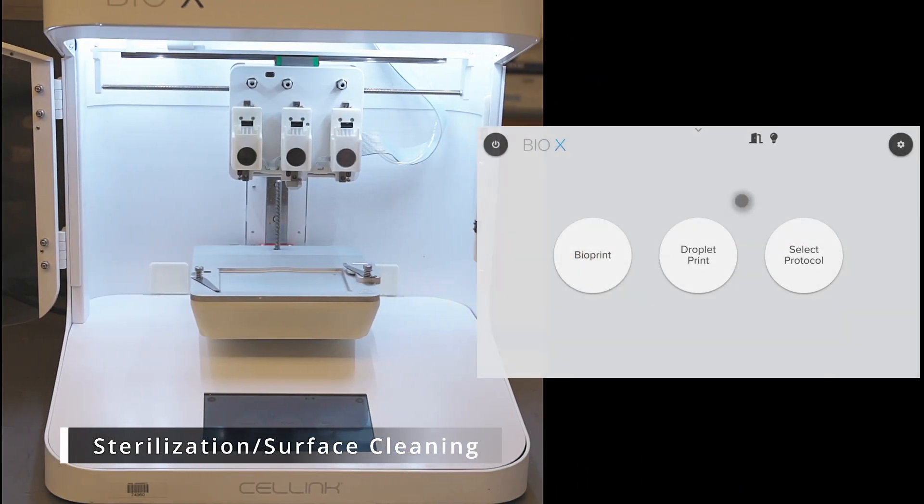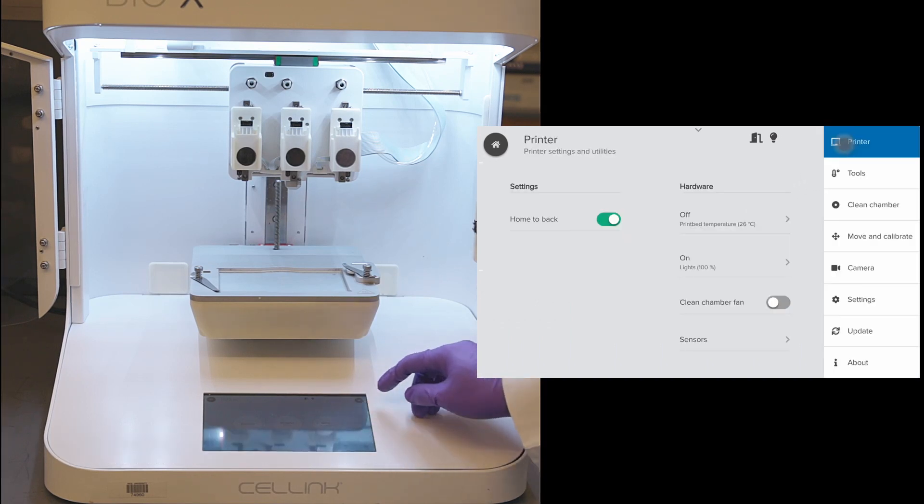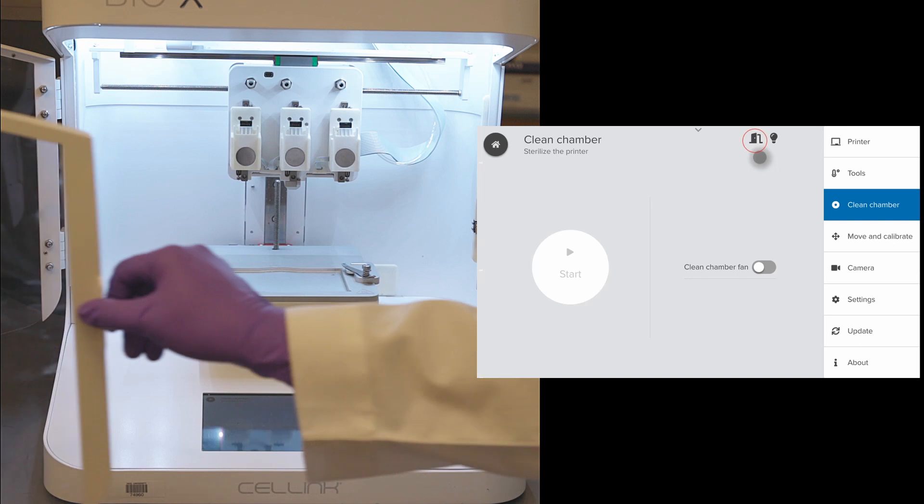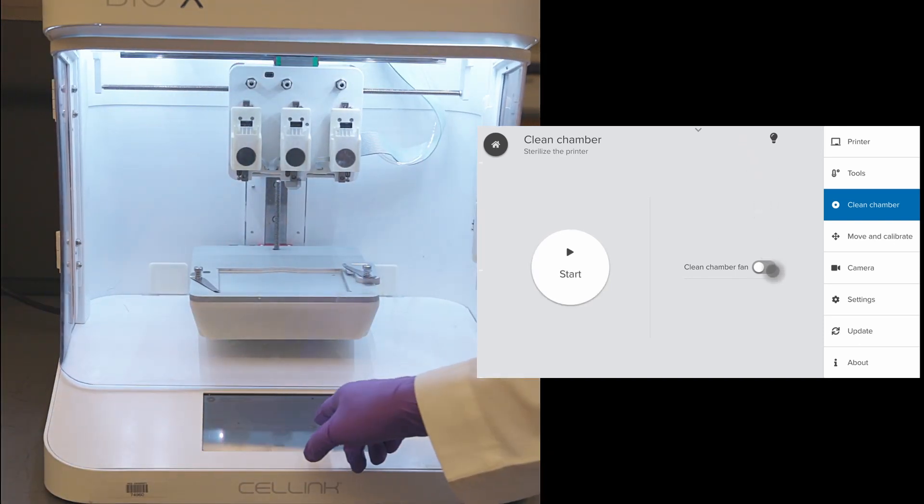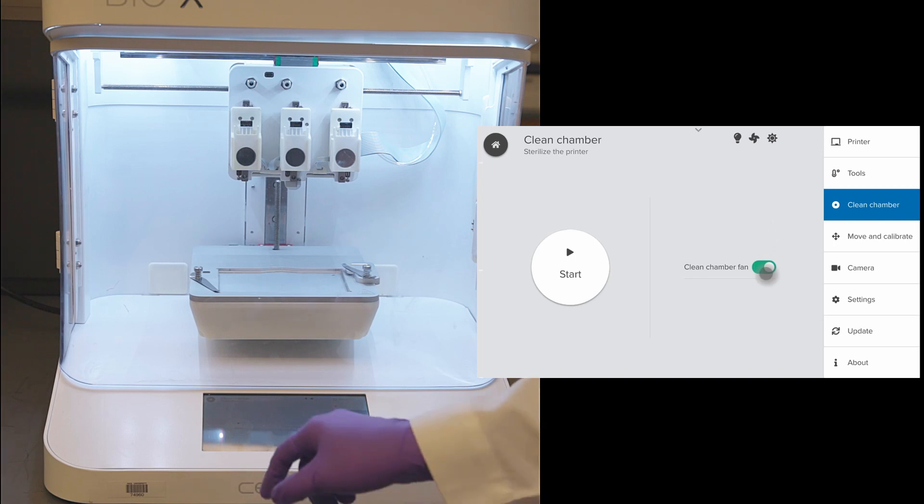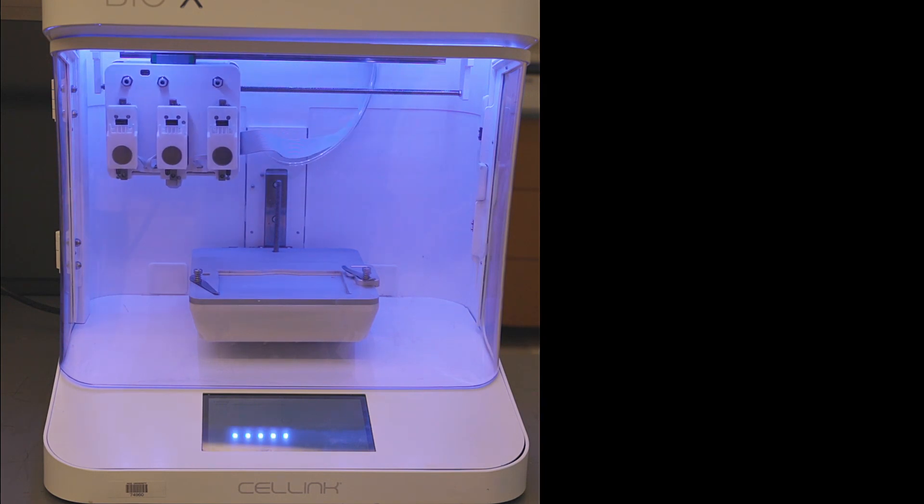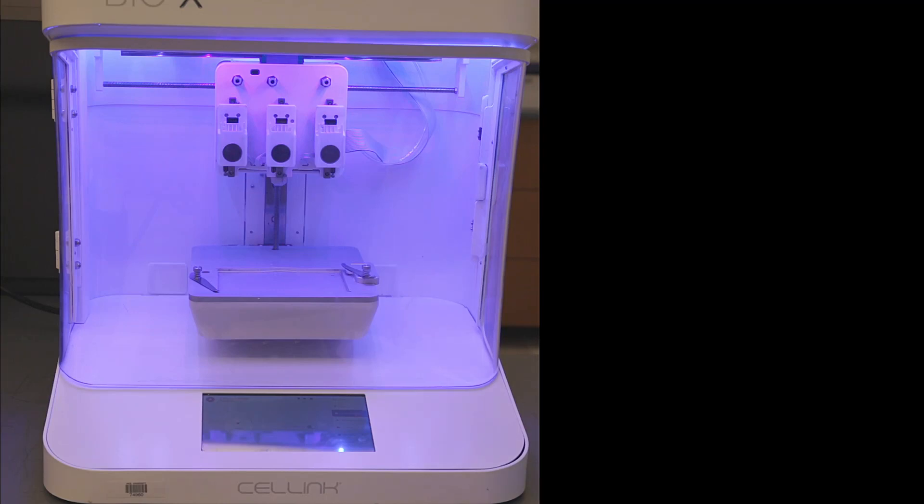To clean the chamber before bioprinting, click on settings and click on clean chamber. The door needs to be fully closed and secured to run the clean chamber protocol. We can enable the clean chamber fan and click start. The UV light is turned on for surface disinfection. After completing the process, the UV lights are turned off.